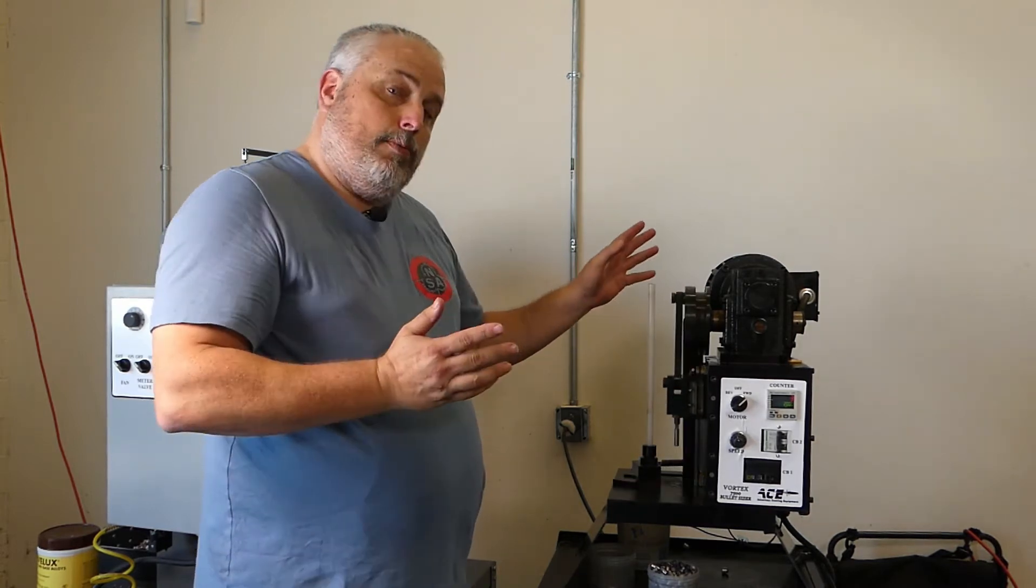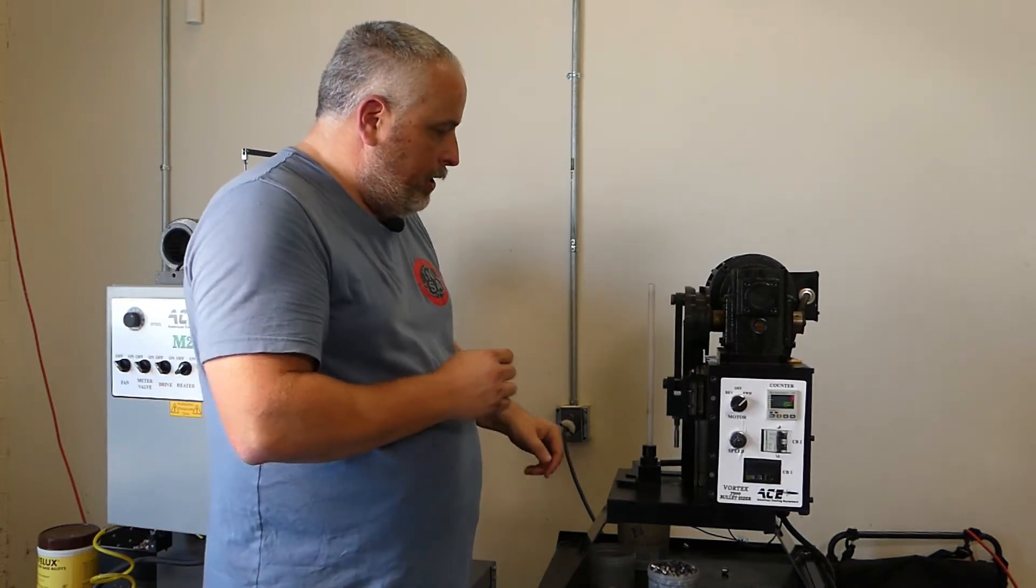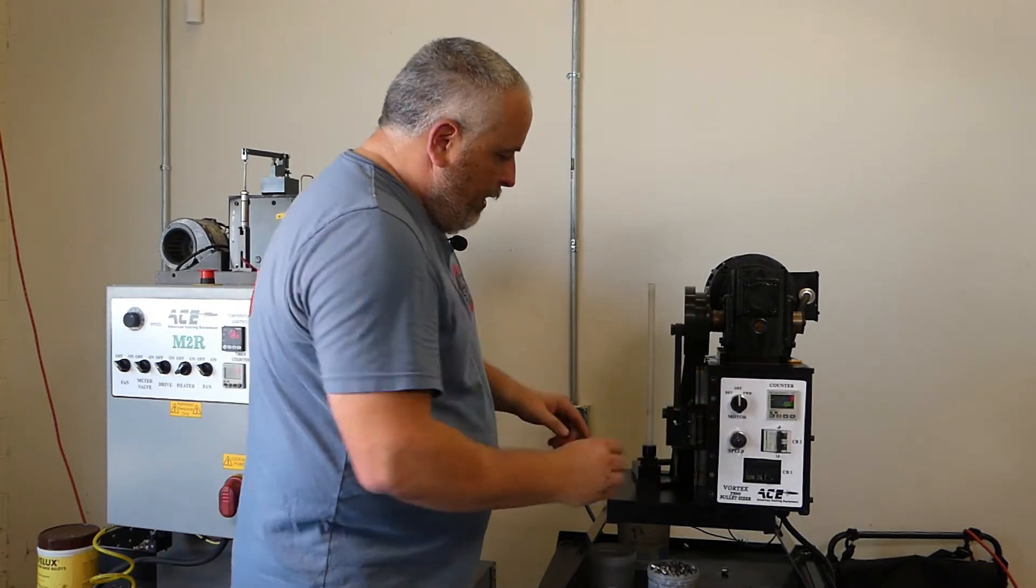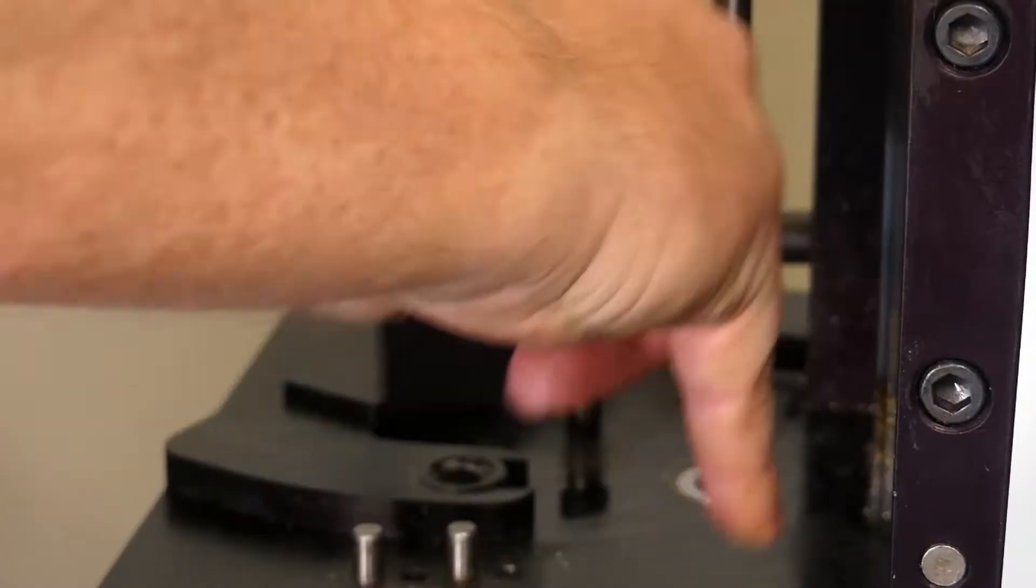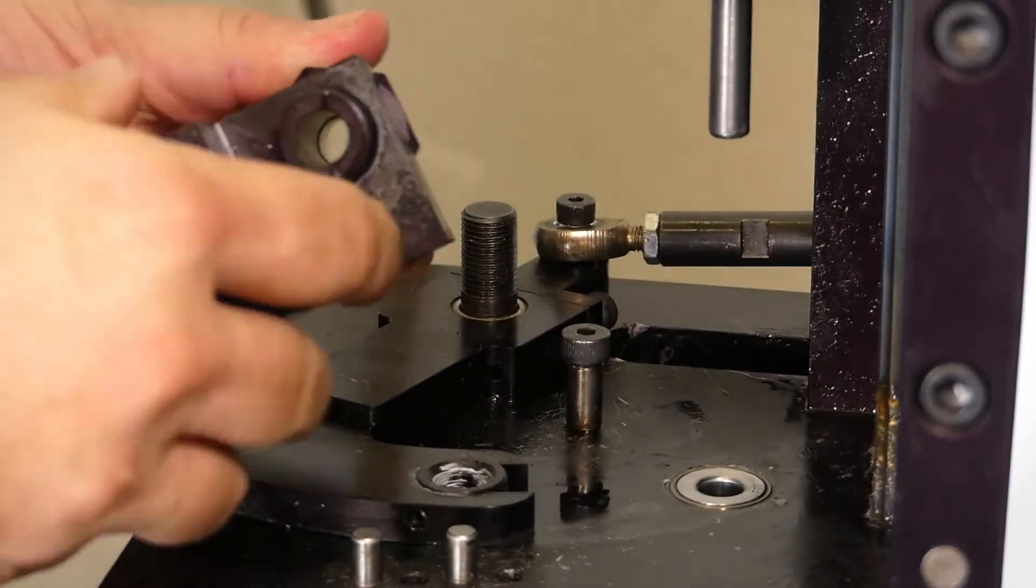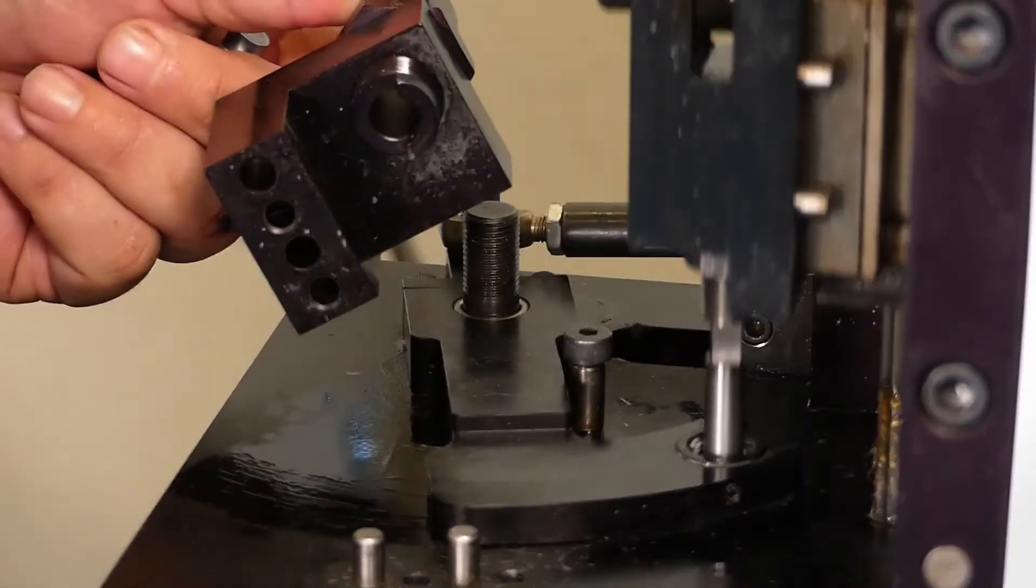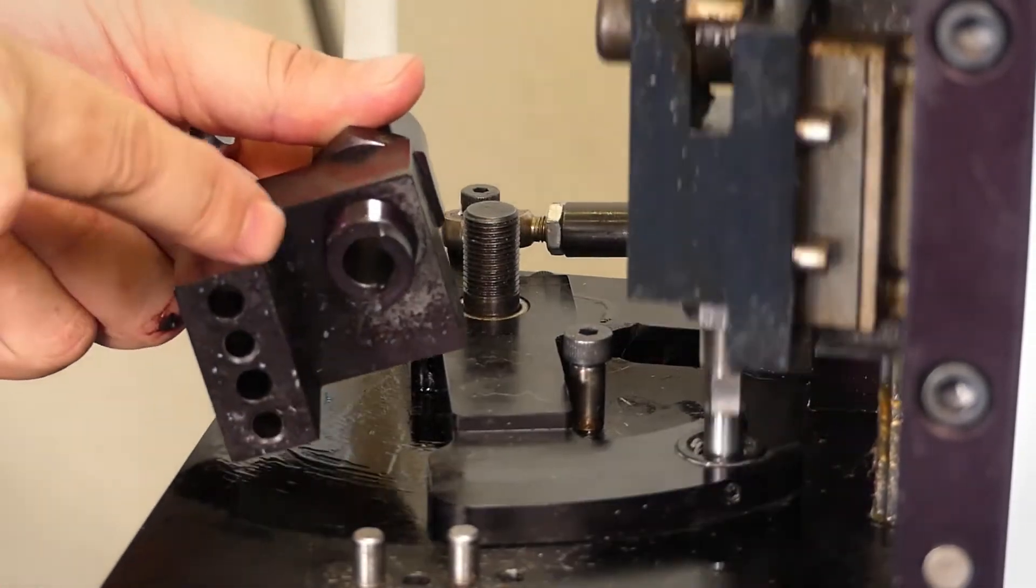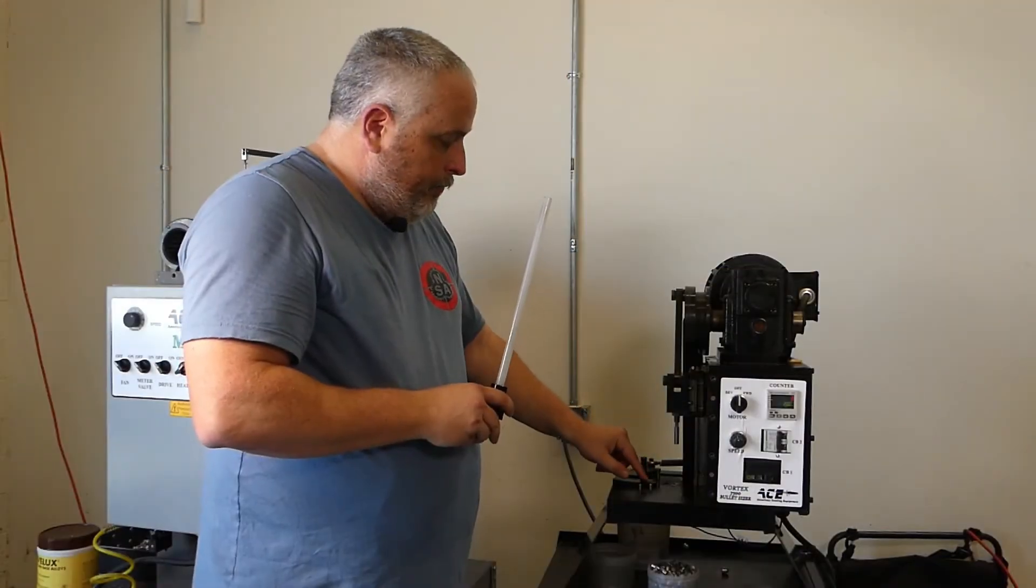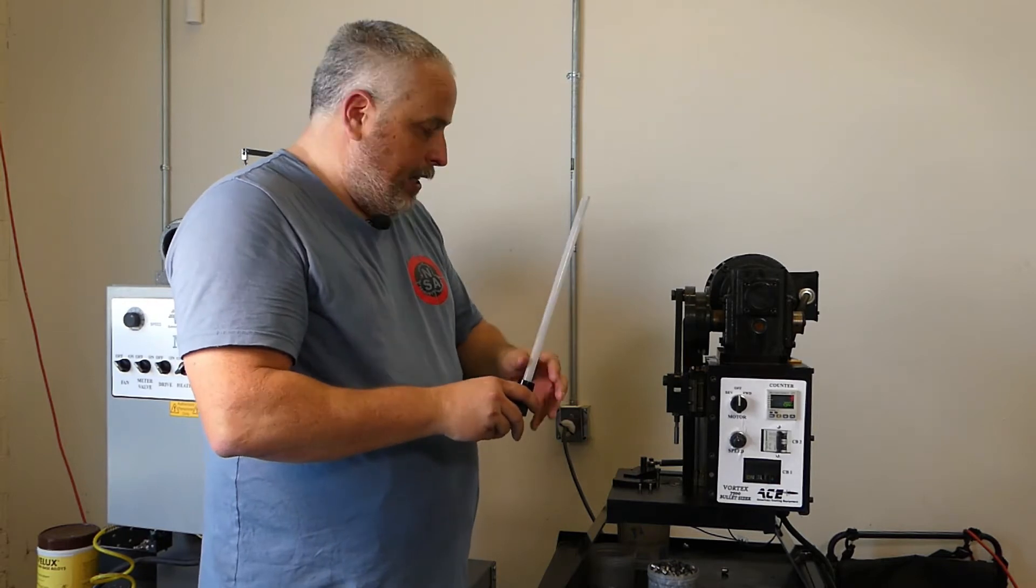You can do pretty much any caliber that you want by changing out the bushings inside of here. So we have the screws off here just so we can show you, but you have this arm that's going to come over and it comes over and picks up a bullet that will drop right here. It'll sit on this arm, fall into the bushing right here, so you change out this bushing for the caliber and you change this tube for the caliber.